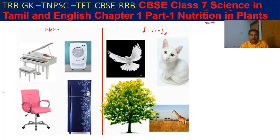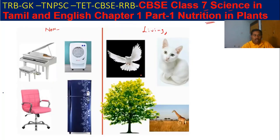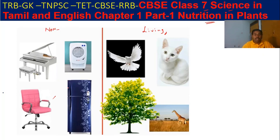I will explain in Tamil as well as try to make some information through English also. So what are the different life processes available? Before that, what are non-living things? Non-living things are also called abiotic — like chairs, tables, and fridges. These are not able to take energy from outside.